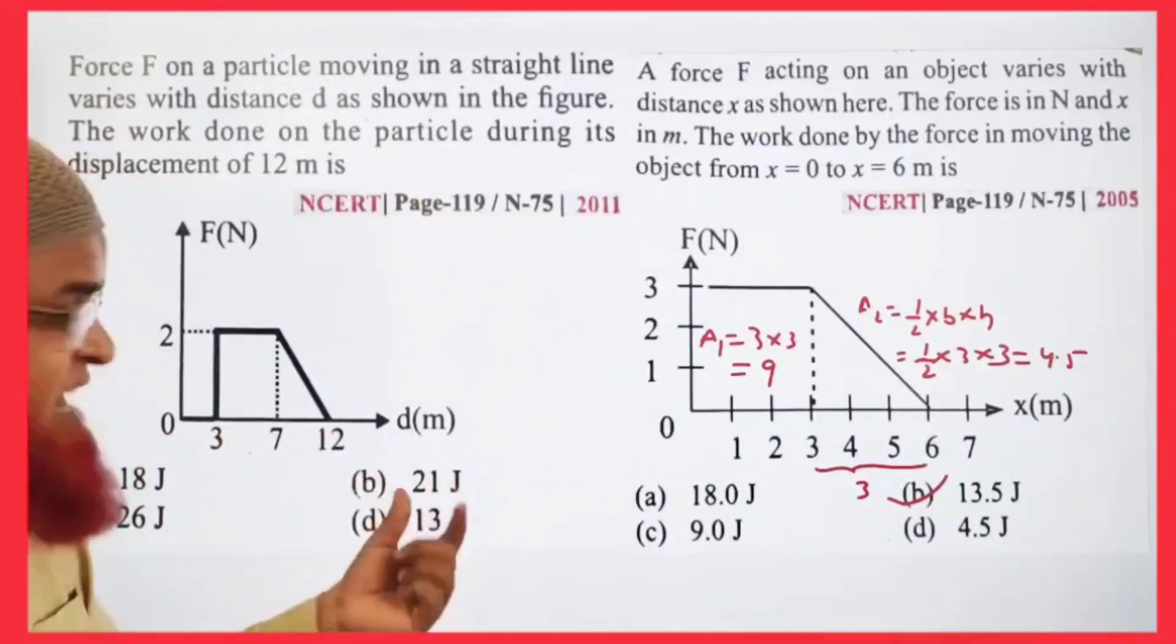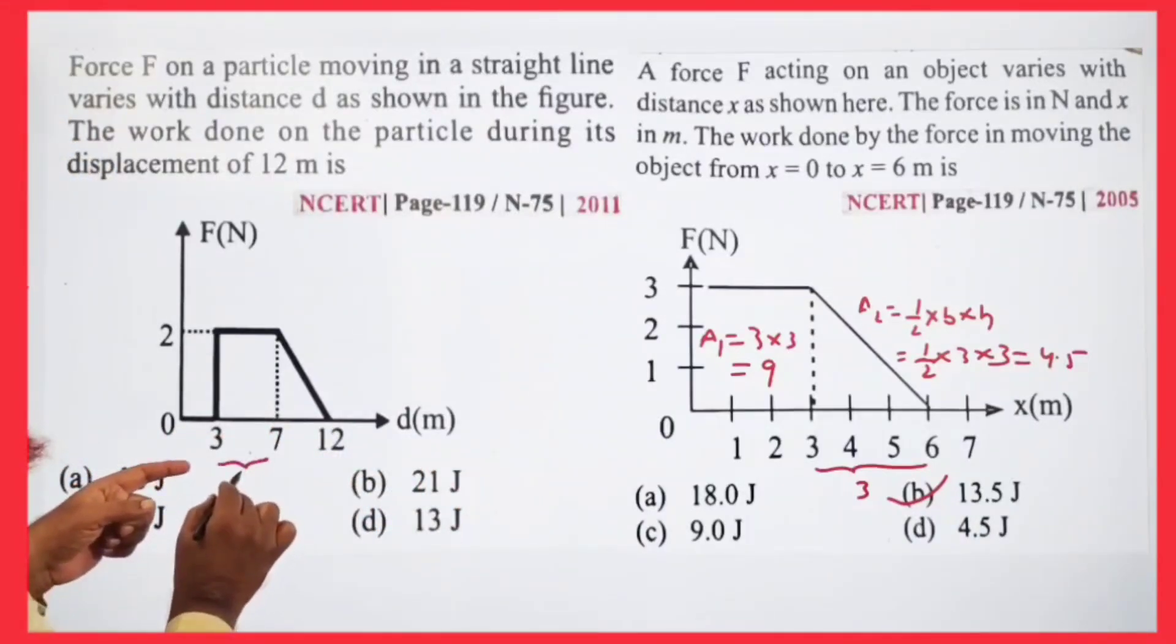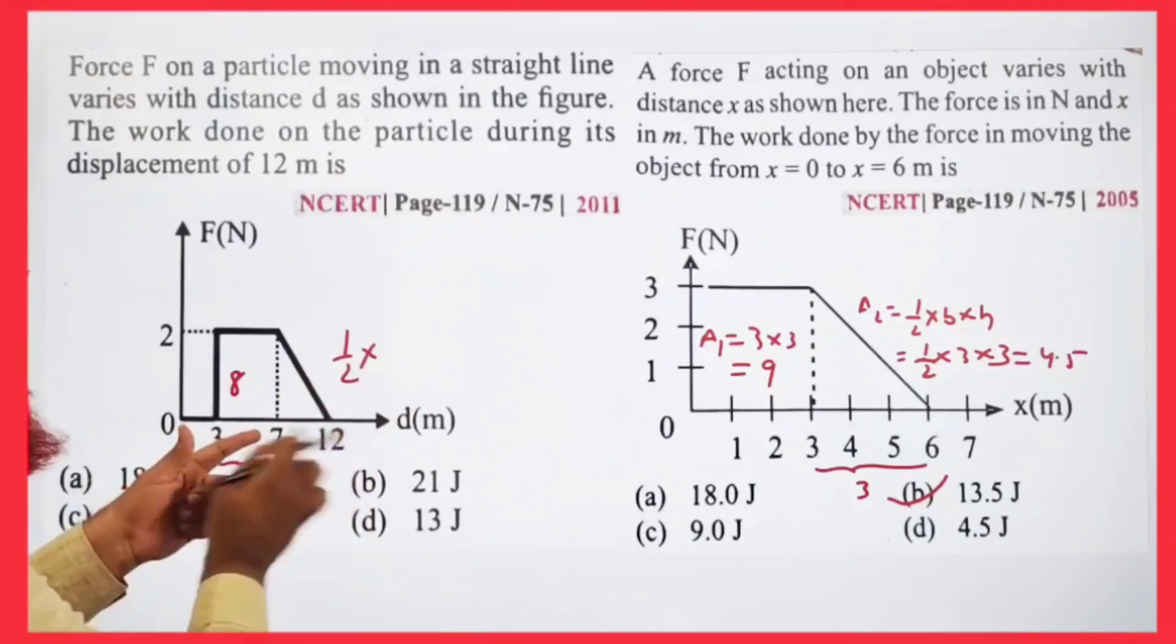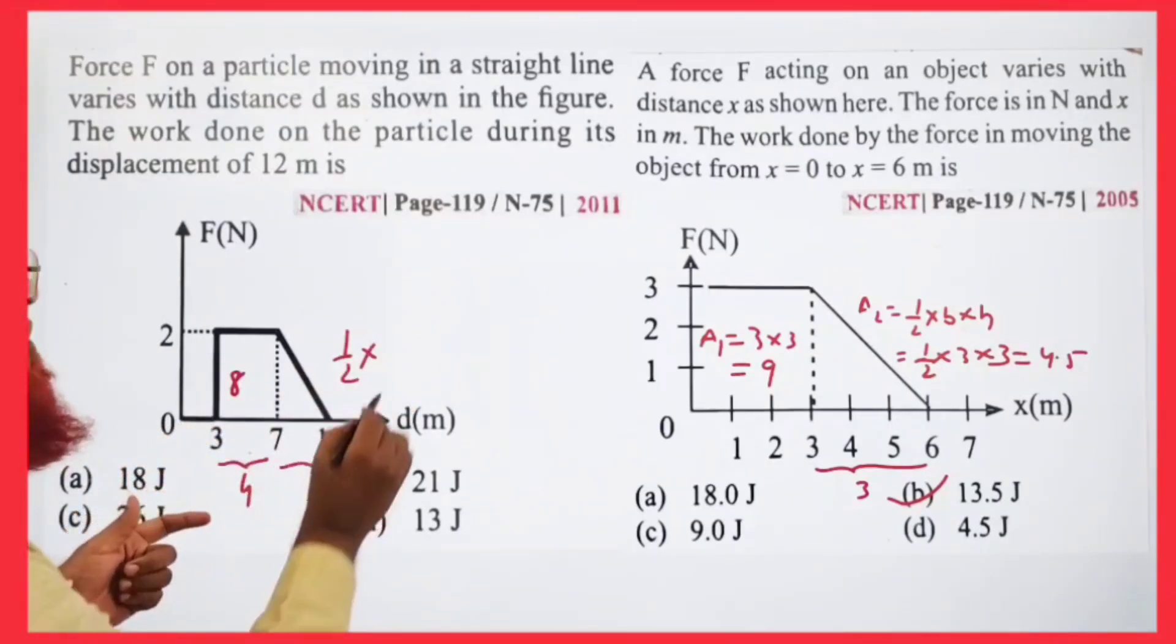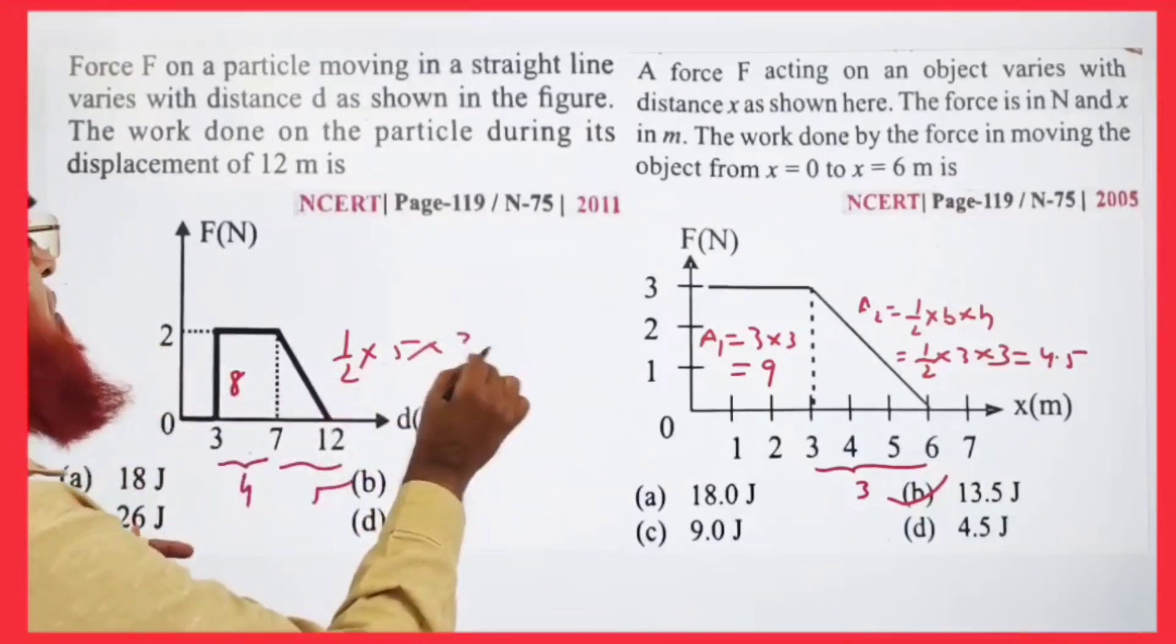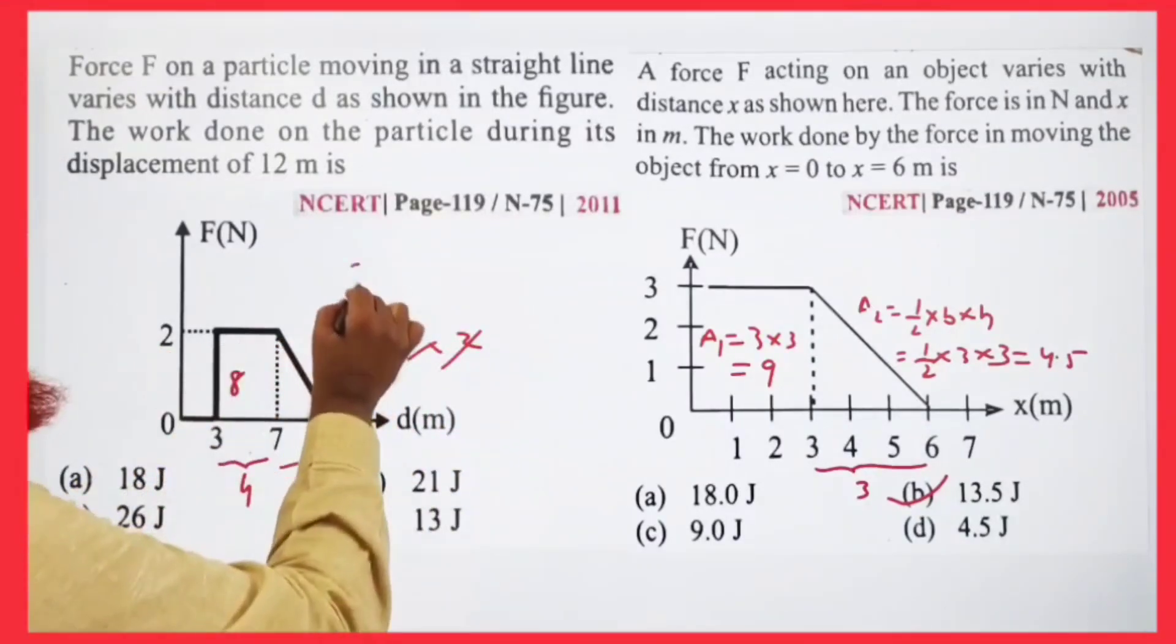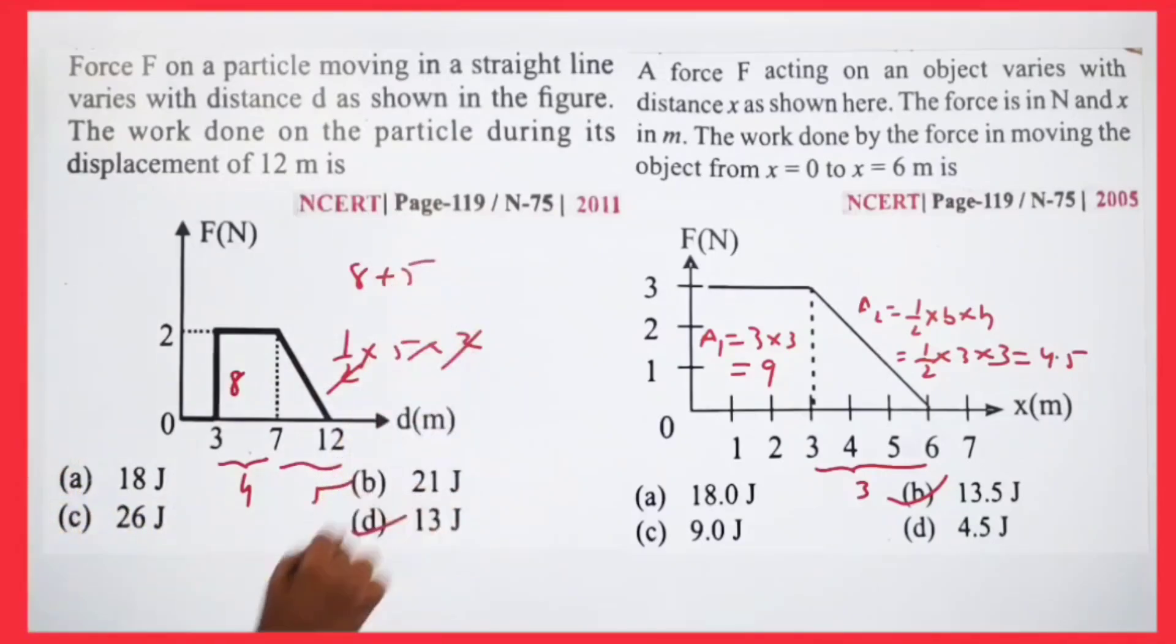Here also rectangle and triangle is there. So this gap is nothing but 4. 4 times 2 is 8 here. And this is a triangle which is nothing but half into gap is 5 here. So 5 into height is 2 here, 2 gets cancelled. So 8 plus 5 is going to be 13 joules.